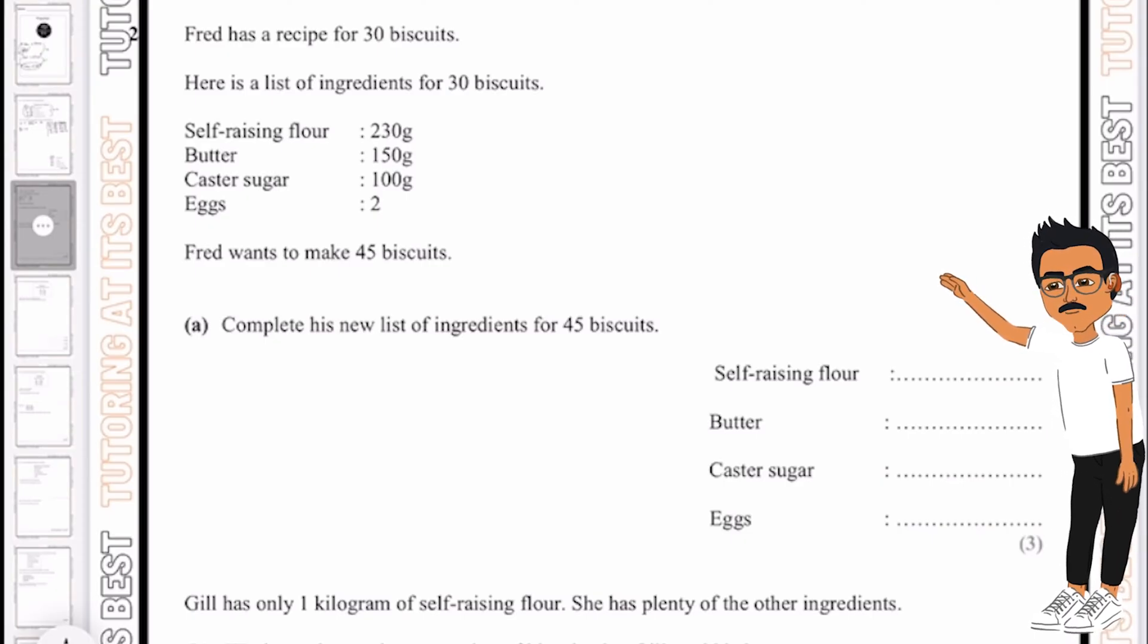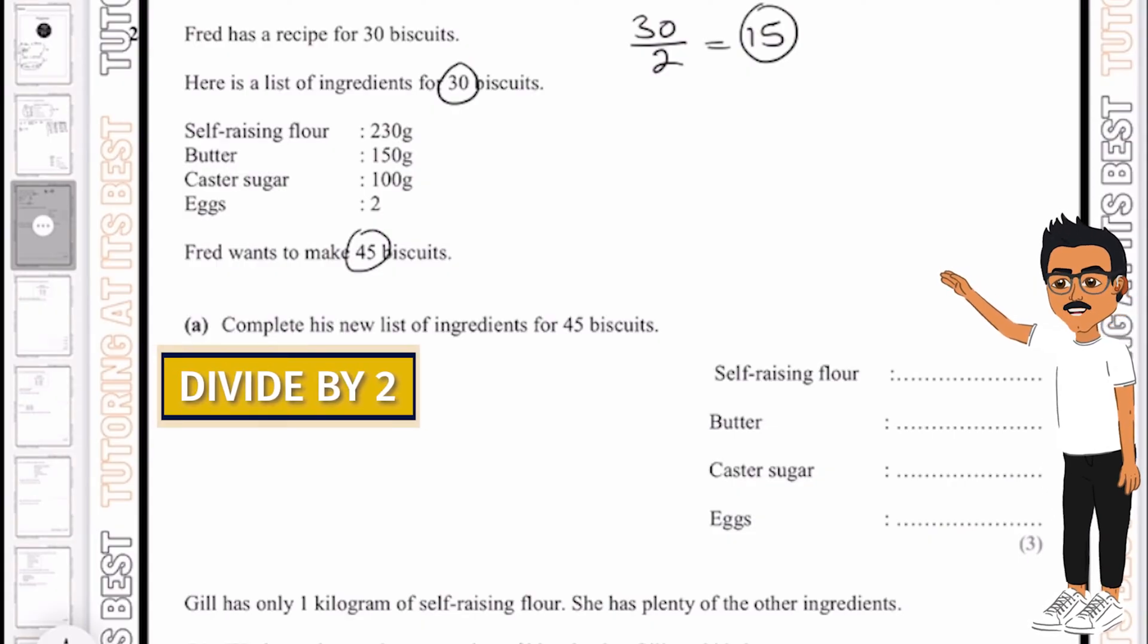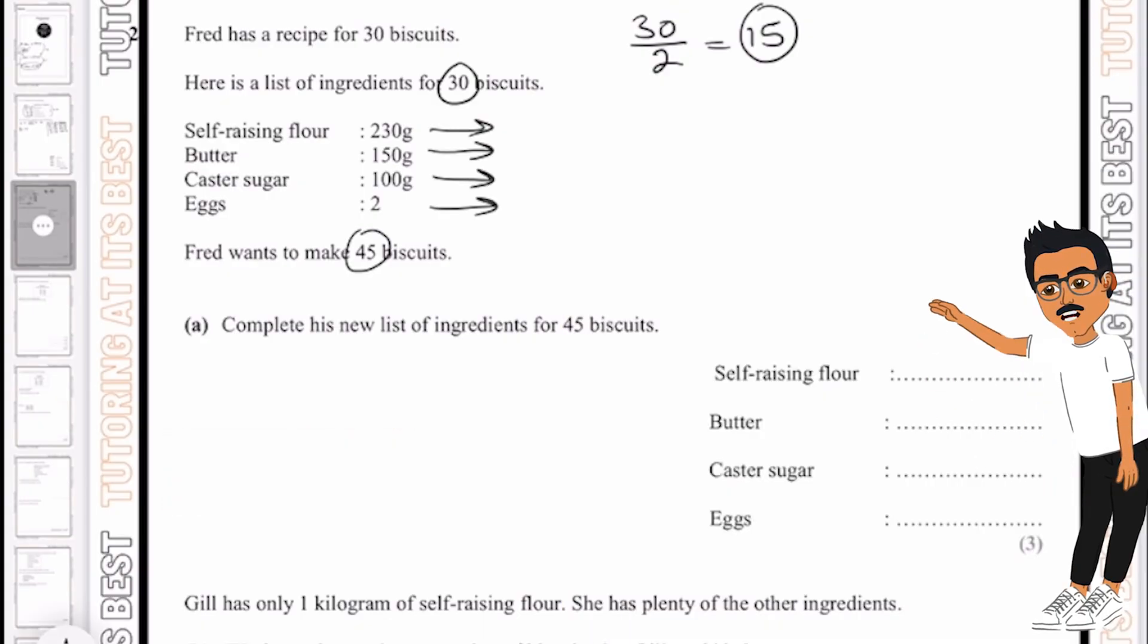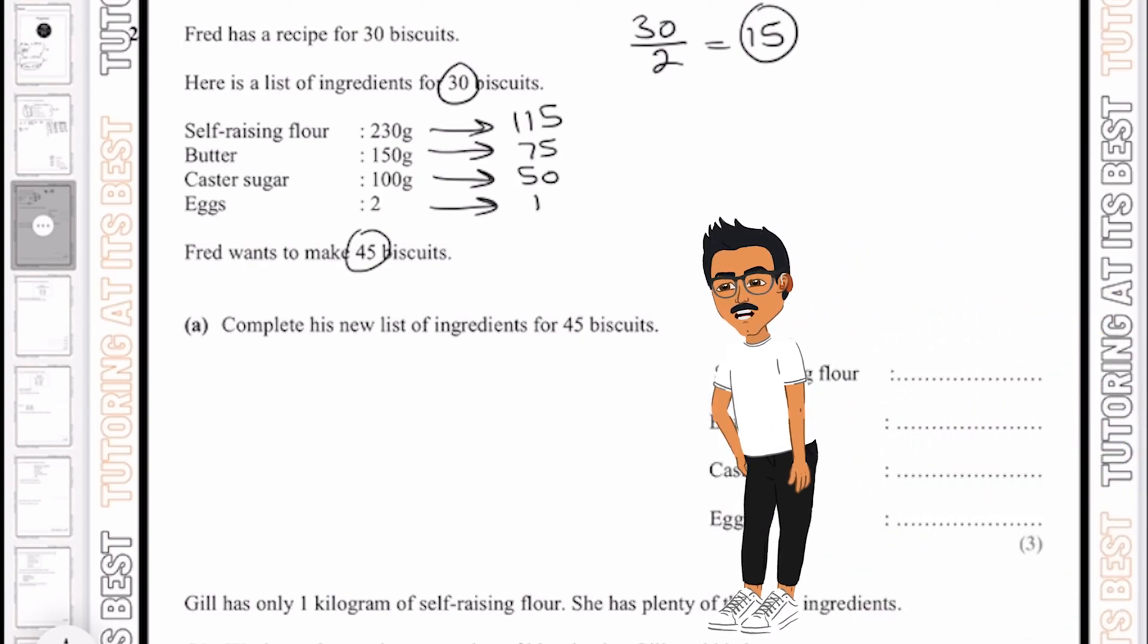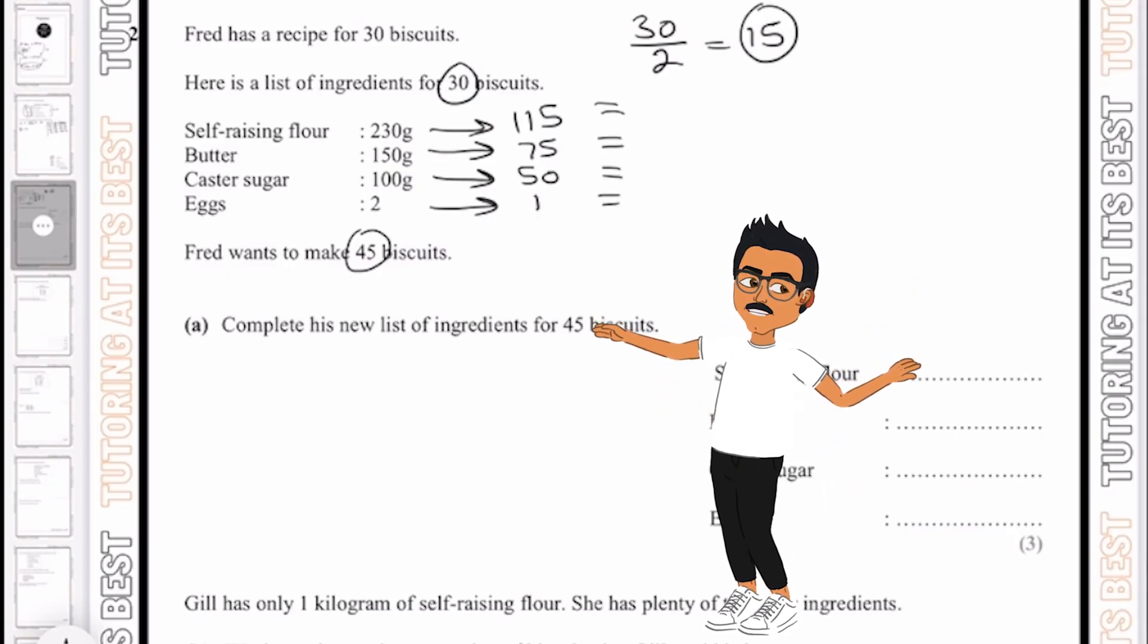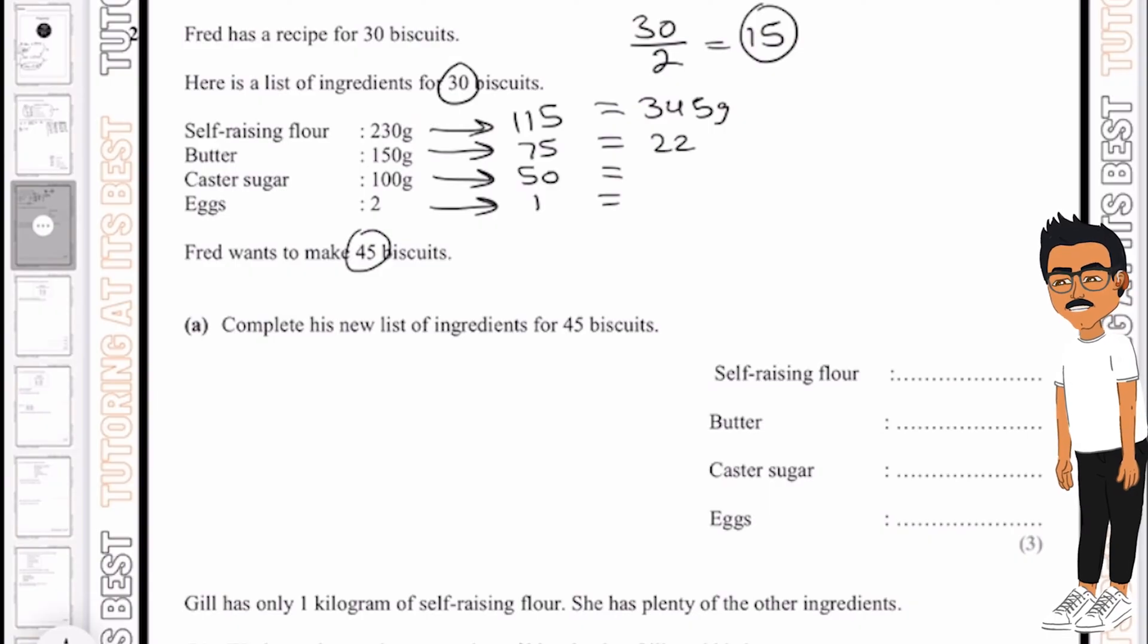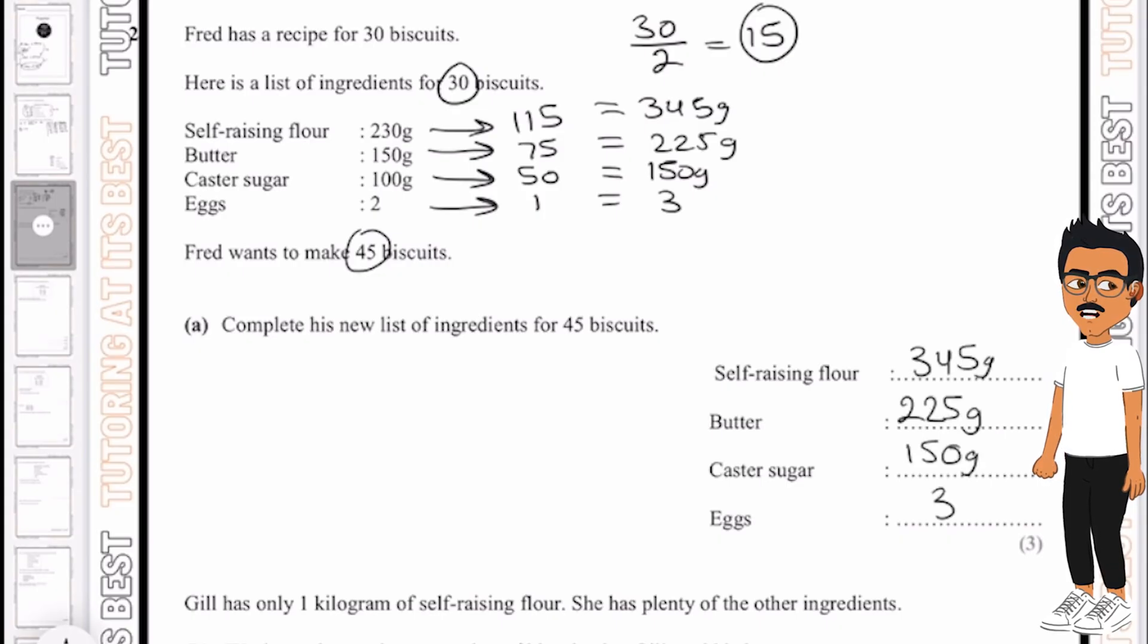So again I know if we were to divide 30 by 2 we would get 15, and then if we would add 15 and 30 that would give us 45. So I'm going to do exactly that: divide them by 2 and then add them on. So that would give me 115, 75, 50 and 1. I'll then add these on. So my 30 biscuits and the value of my 15 biscuits would then give me 345 grams, 225 grams, 150 grams and 3. And that's all I need to write in the bottom section.